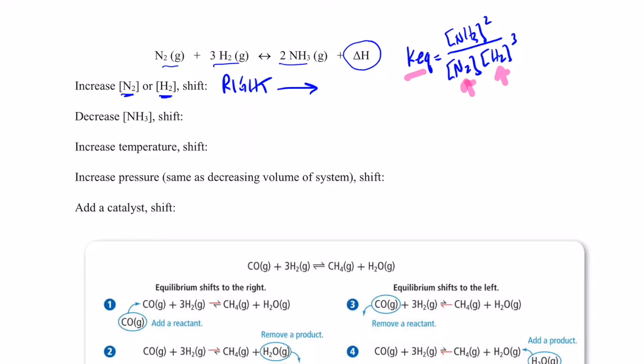So, if I make nitrogen gas and hydrogen gas concentration bigger by adding more reactant to the system, doesn't my numerator also have to get bigger to compensate for that so my equilibrium constant stays constant? So, in order to do that, we would have to make more ammonia.